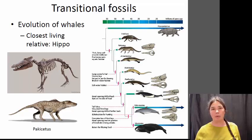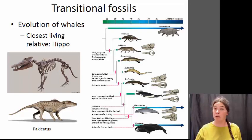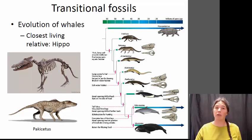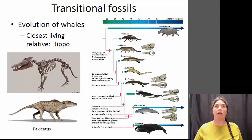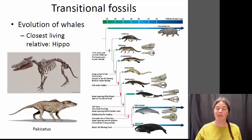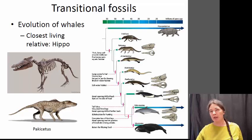I'm going to give you one example here of the evolution of whales. Whales are a mammal, and mammals originally evolved on land. Most mammals are quadrupeds, meaning they have four limbs, and they're warm-blooded and breathe air. Whales have lost their hind two limbs, but they still have many of the same features that other mammals have. The closest living relative of a whale is actually the hippopotamus.